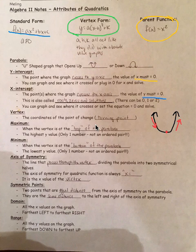Maximum, this is when the vertex is at the top of the parabola. It only occurs when it opens down, it's the highest y value, it's not an ordered pair. Minimum is when the vertex is at the bottom of the parabola. This is the lowest value, when the graph opens up, and it's only one number.